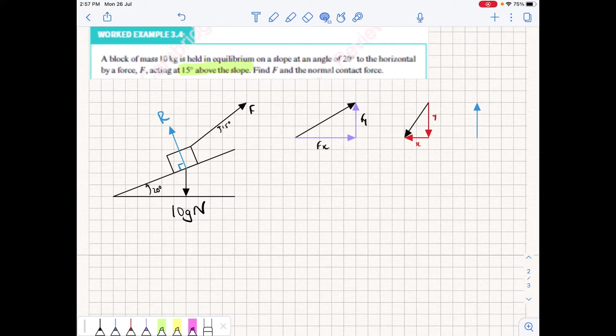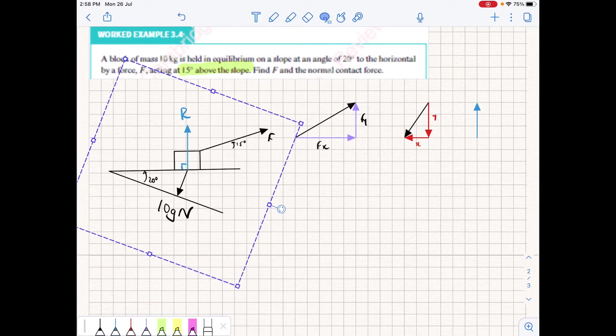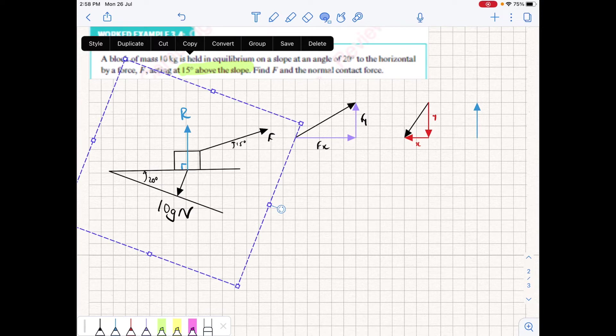This example asks us to resolve two unknown forces, one being force F and one being the contact force in this diagram labelled R. Both of these forces are not at the vertical or horizontal, so when we consider these forces they are at angles other than vertical or horizontal.